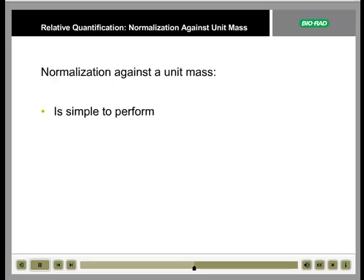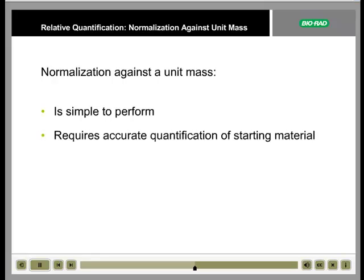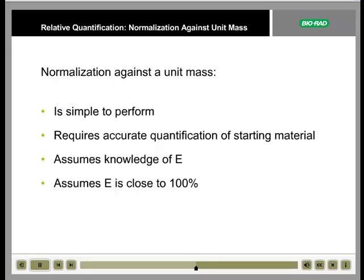This method is simple, but does have some limitations. It requires accurate quantification of the starting material. It assumes knowledge of the reaction efficiency and that the efficiency is approximately 100%. It also assumes that there are few changes in total gene expression between the sample and the control. Some of these limitations can be overcome by using normalization against a reference gene.